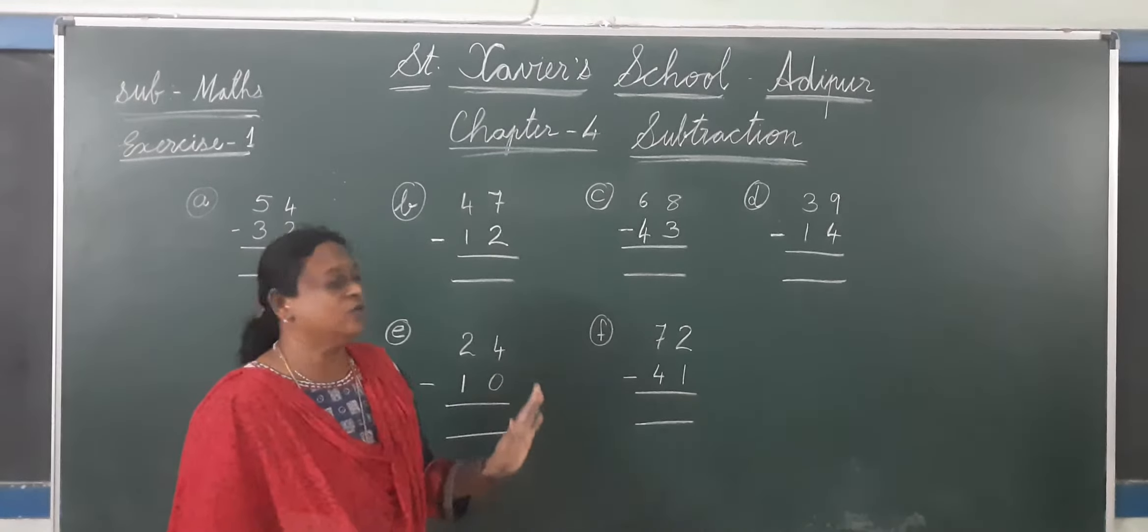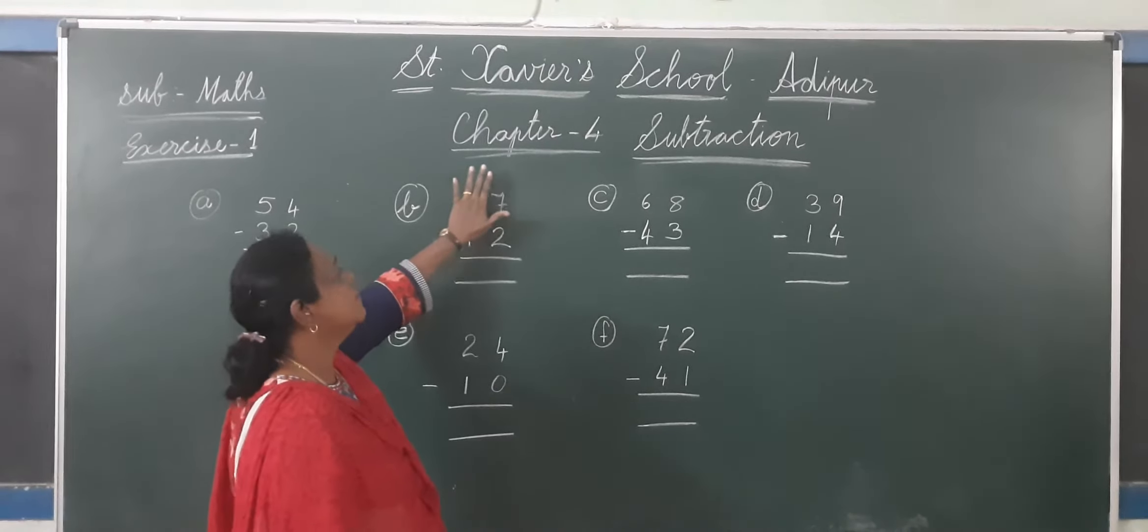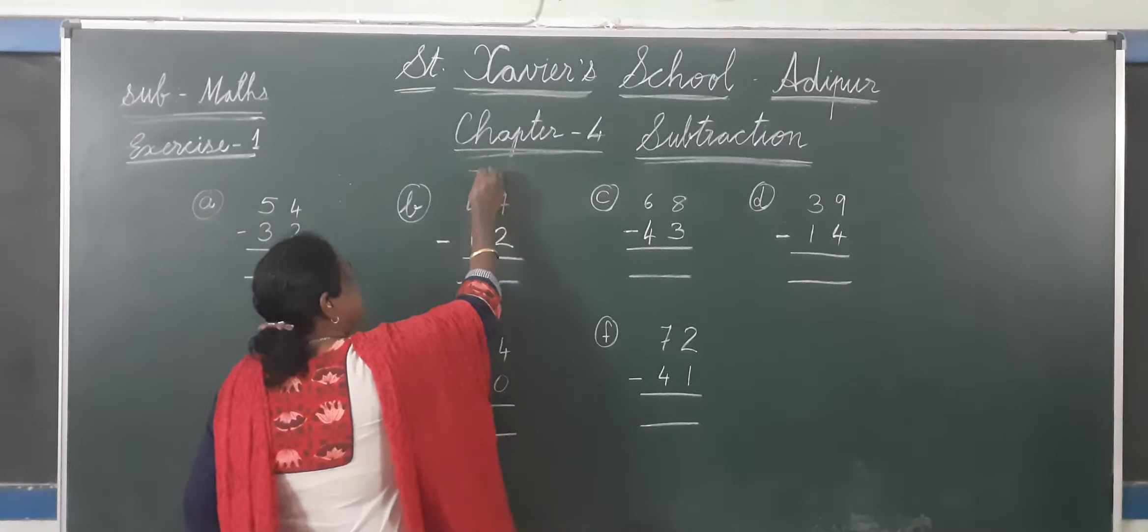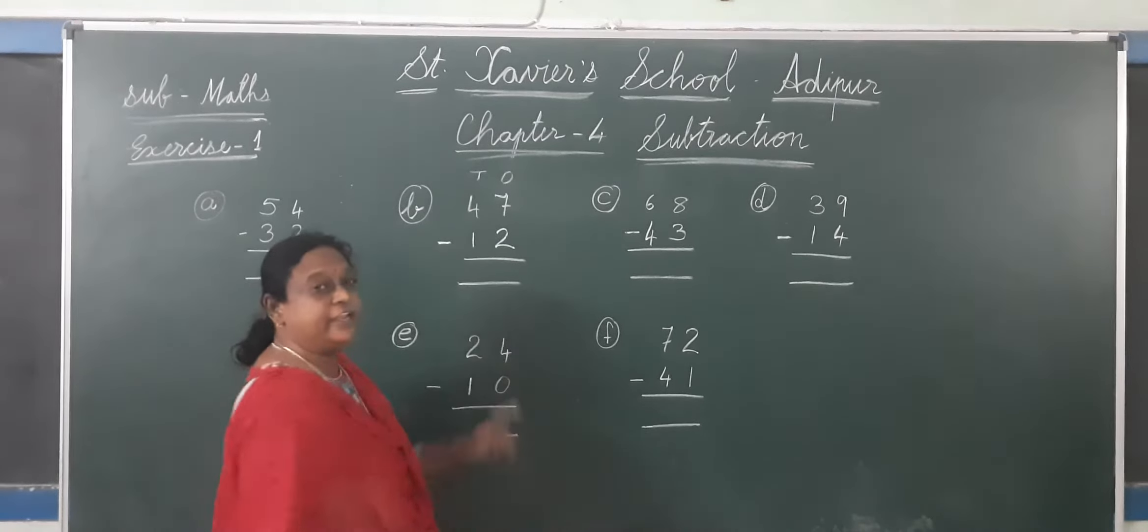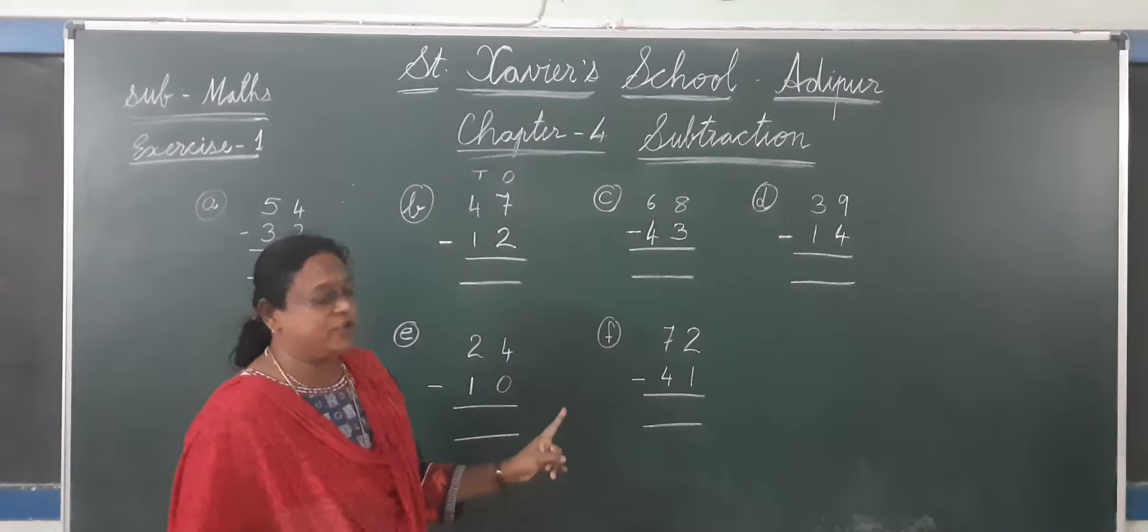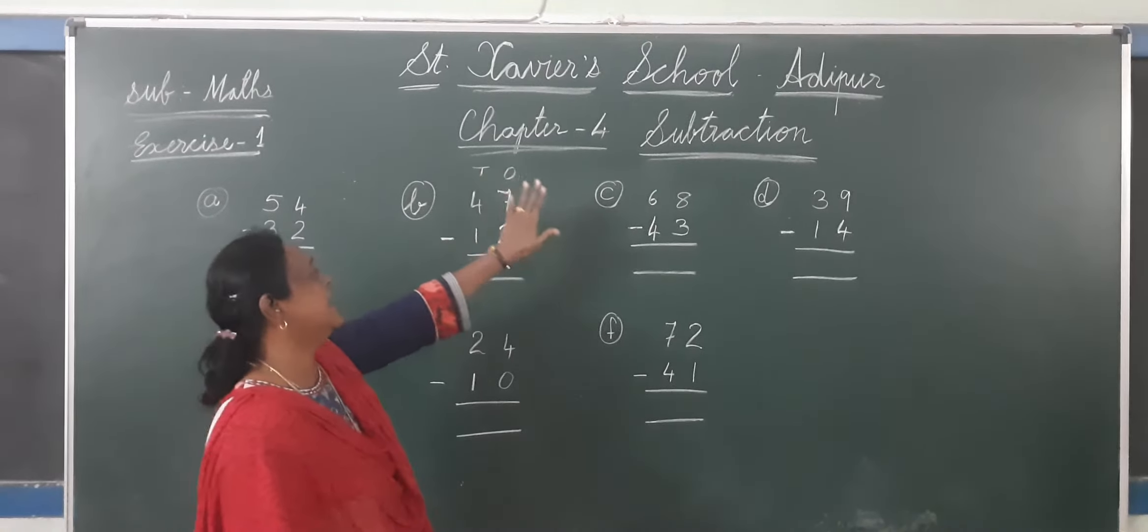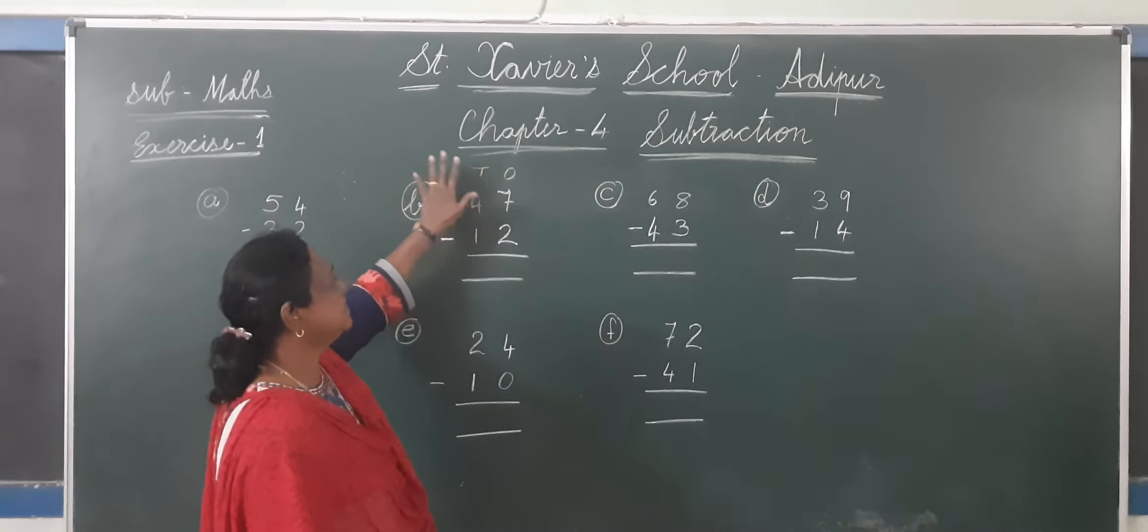These are our two digit numbers. In this, I have already told you that first you start with ones side. This is tens and ones. In video I have already explained you. Now we will start with ones and tens.